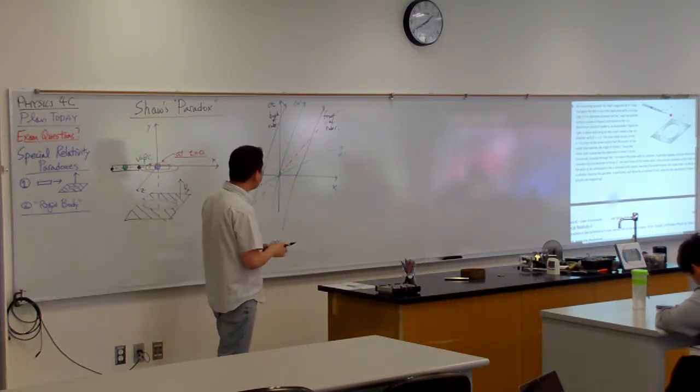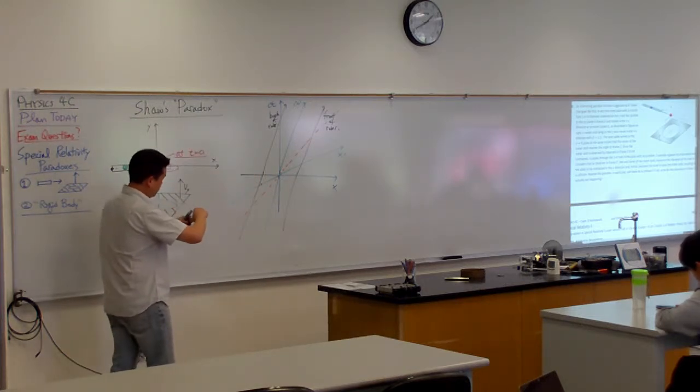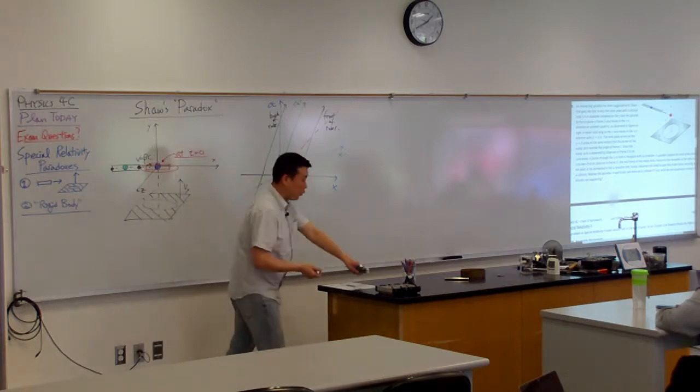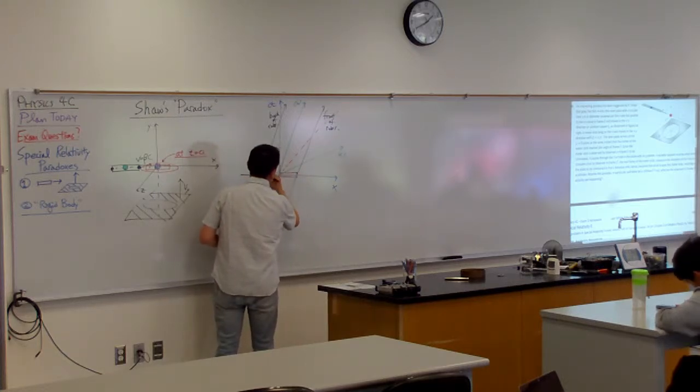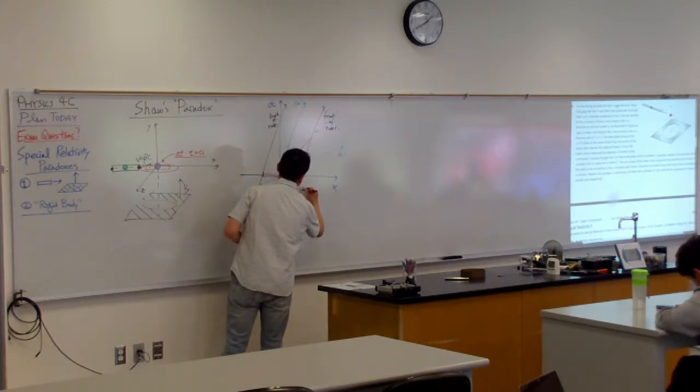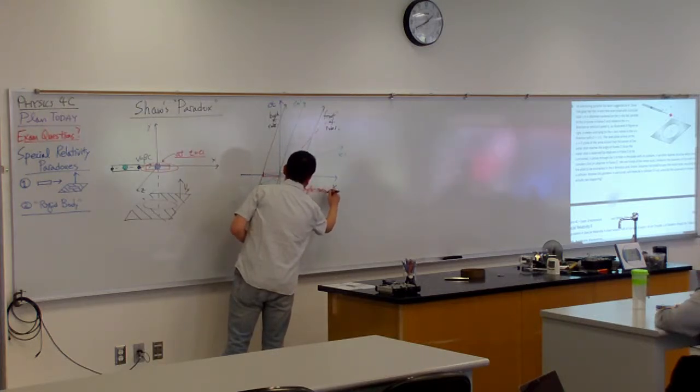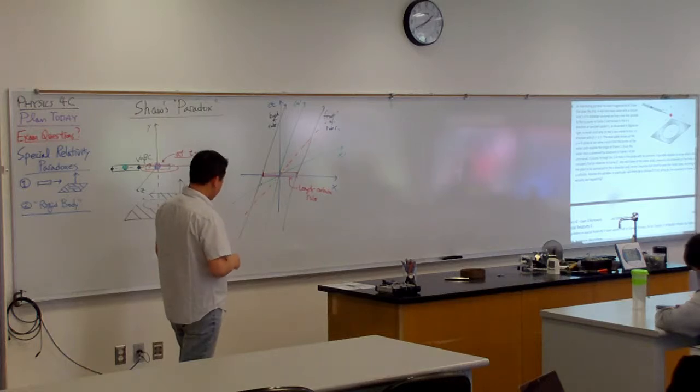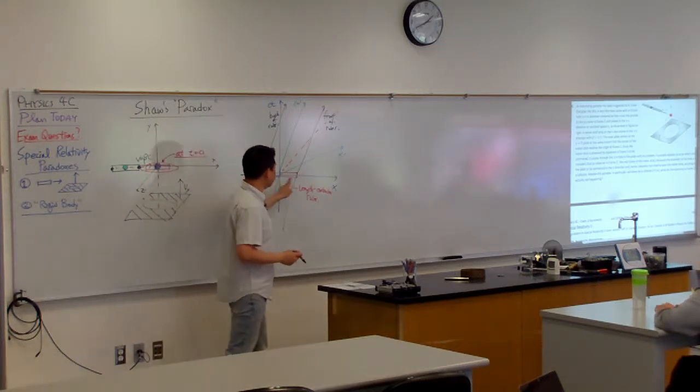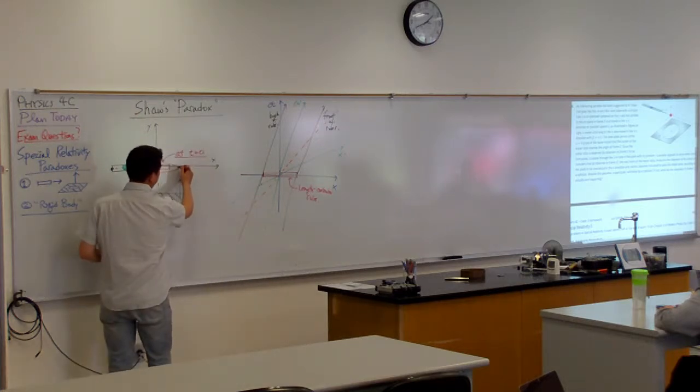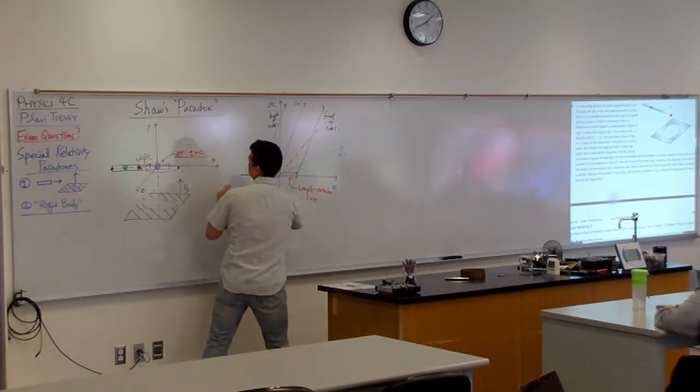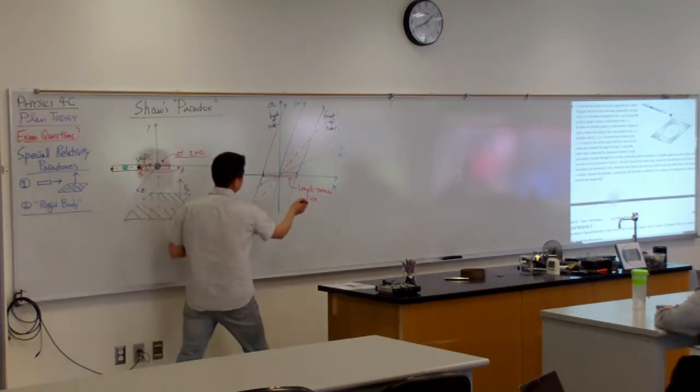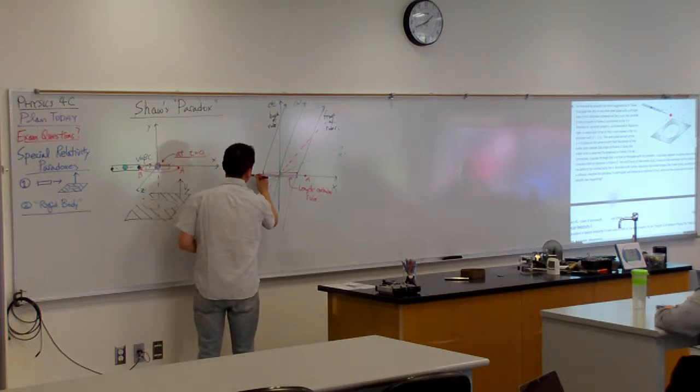So this is the Lorentz contracted length that's being measured here. The position of all the locations of the ruler at time equals zero. So this is the length contracted ruler. And at this moment in time, at t equals zero, if you are to locate two points, one end of the hole and the other end of the hole, the two antipodal points of the hole, then you would have, let me call this point A, call this point B, this would be A, and this would be B.